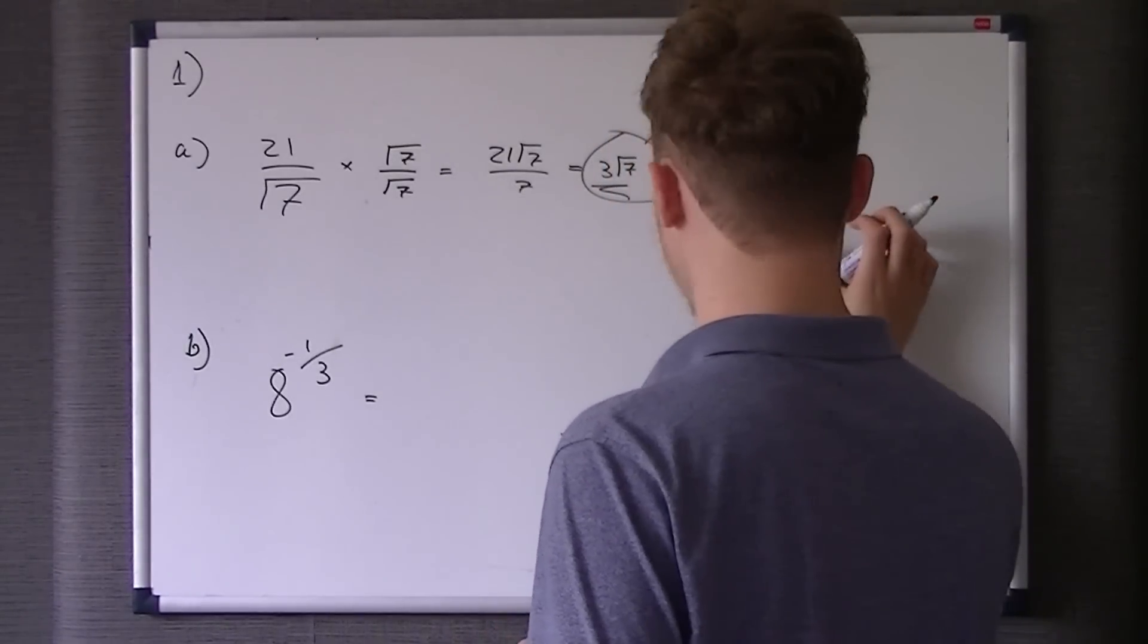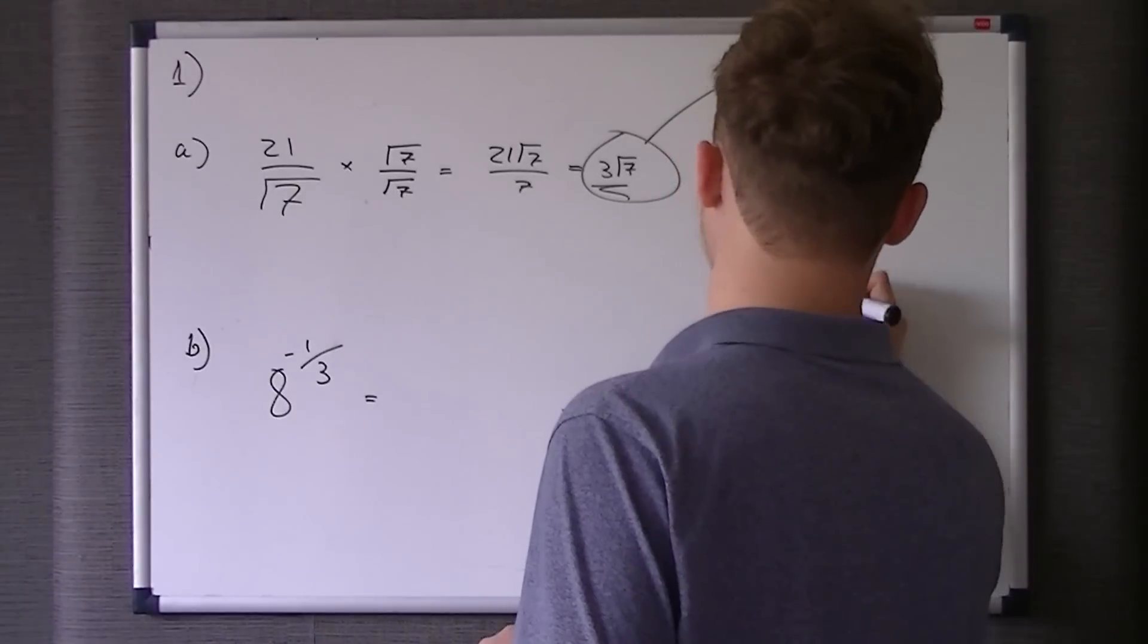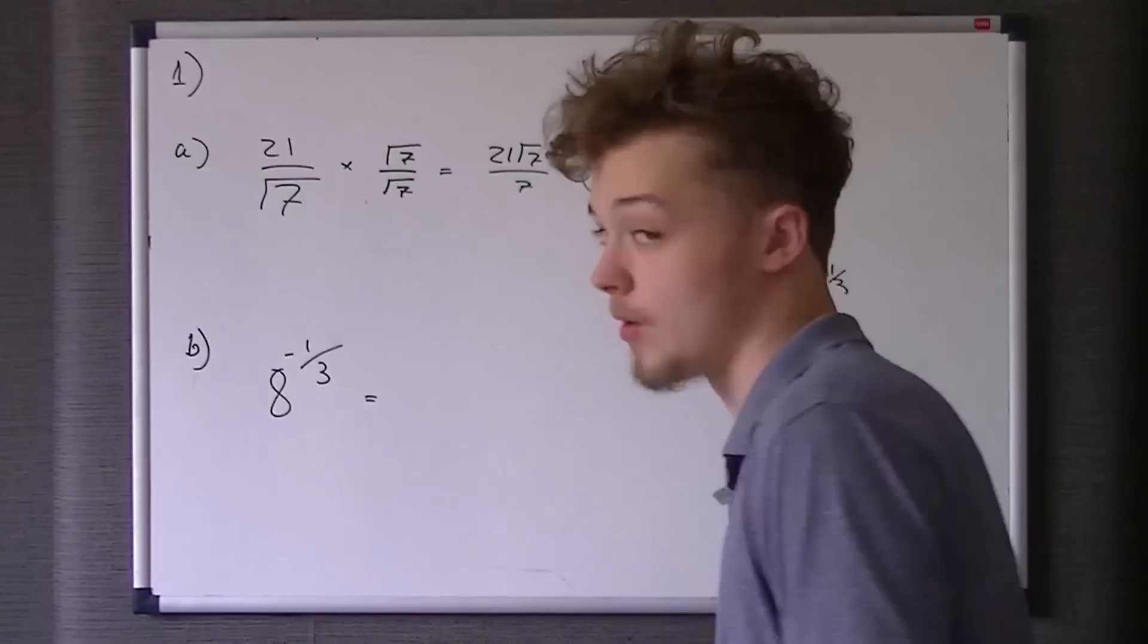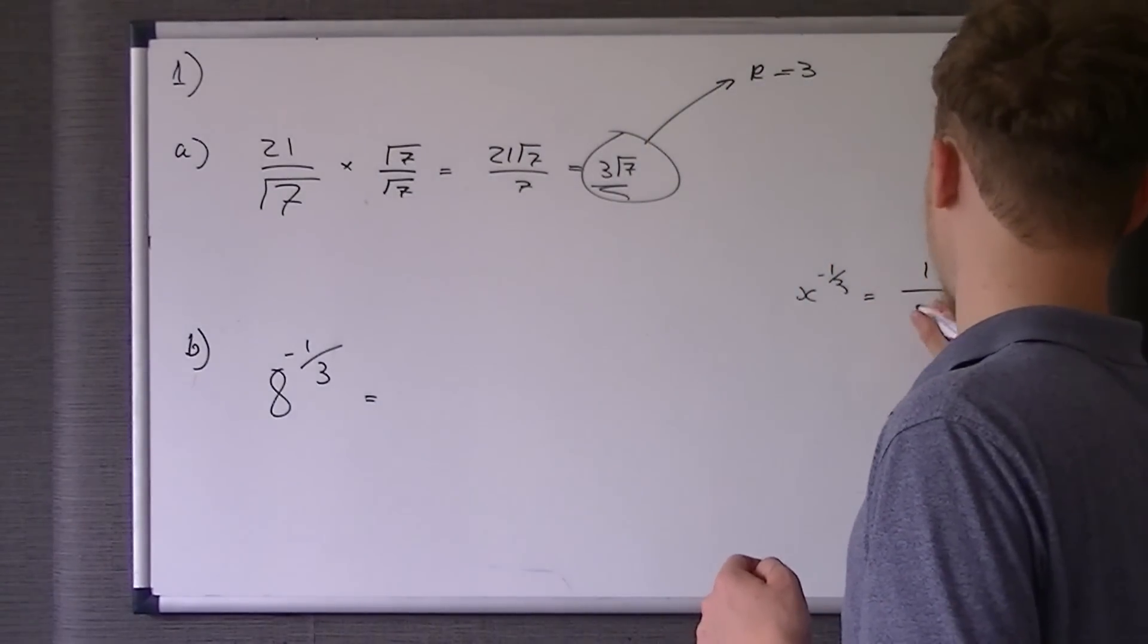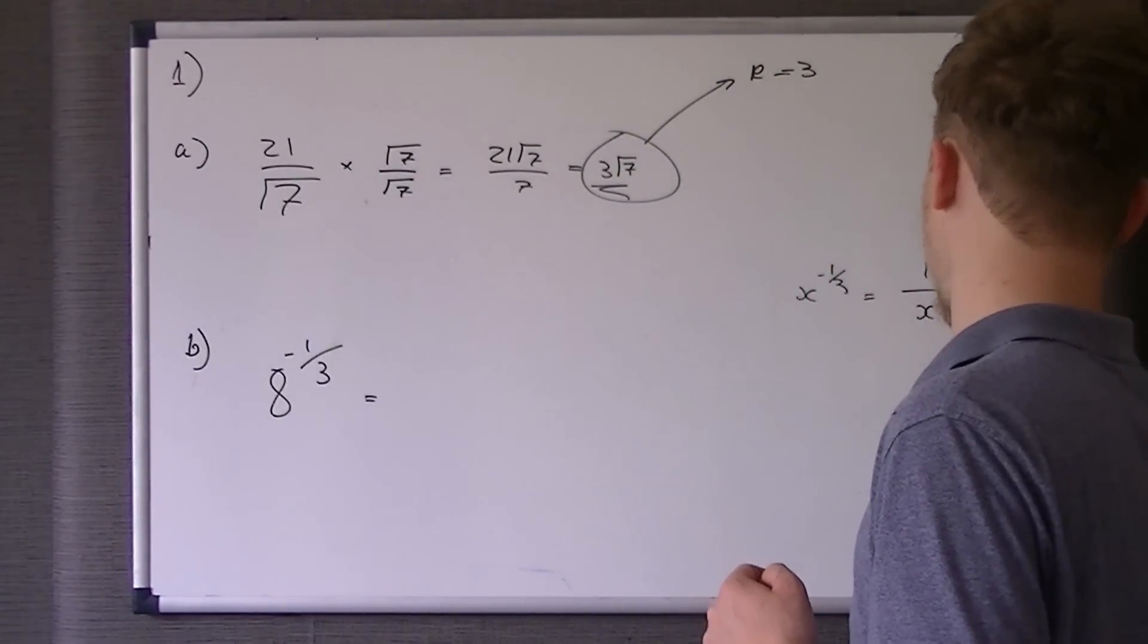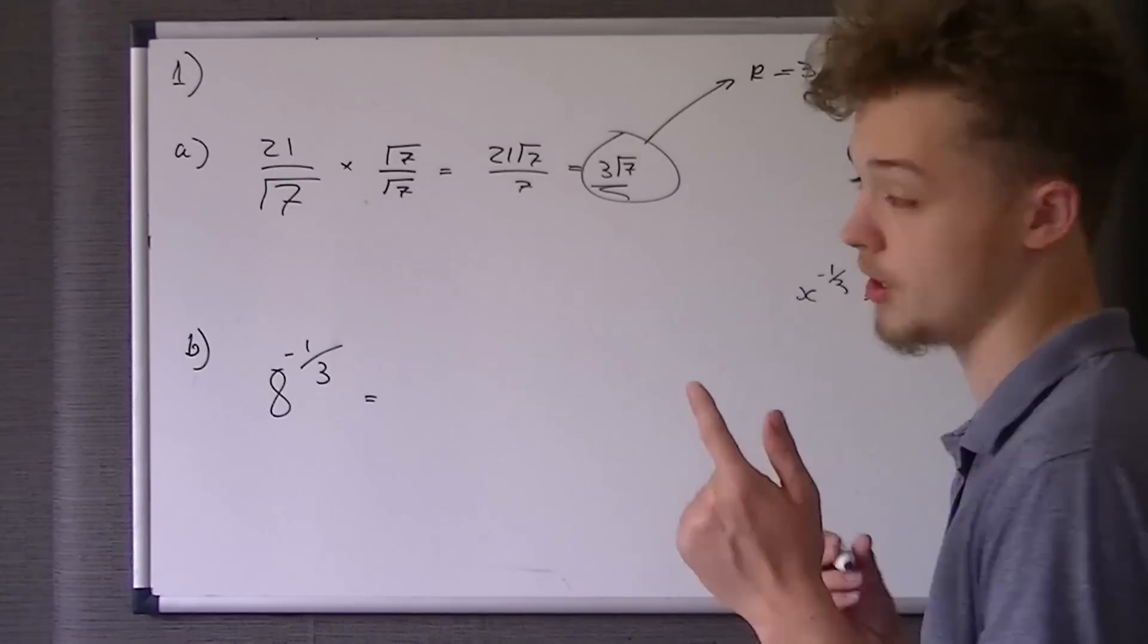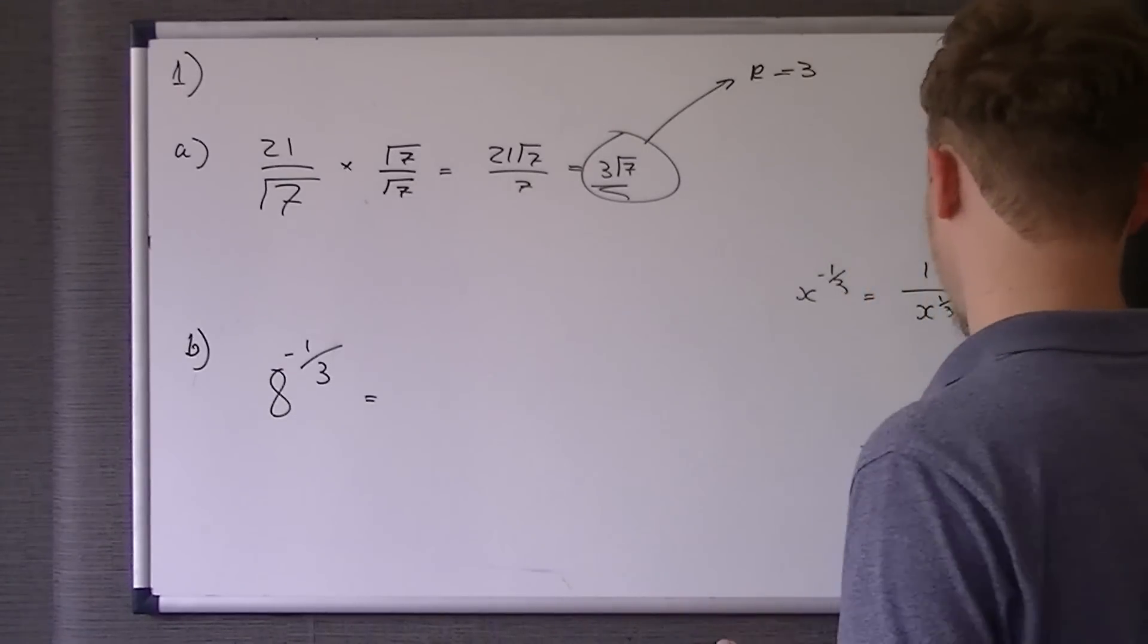So if we call it x to the power of negative a third, what you would do to make that positive is you'd go 1 over x to the third. So basically, when you flip this fraction, you turn the power positive.